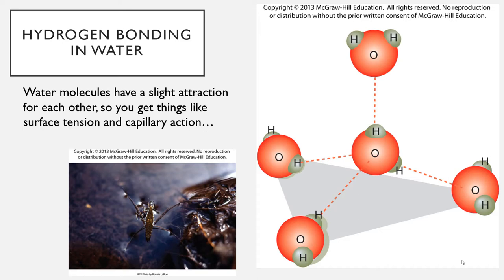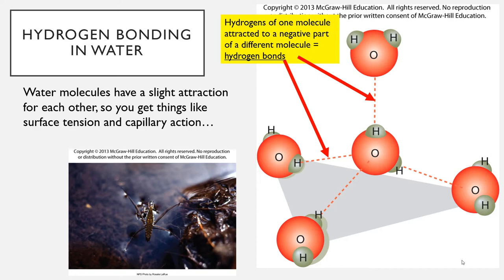You can see how understanding the structure of a molecule and its properties lets you explain other phenomena. You get things like surface tension and capillary action. Here's a picture of a water strider standing on the surface of the water — how is it able to do that? Those water molecules are attracted to each other and stick together, so if you spread out your weight and don't weigh very much, you can stand on that surface. The reason is that they're all polar — the negative end of one is attracted to the positive end of another, where the hydrogens are.